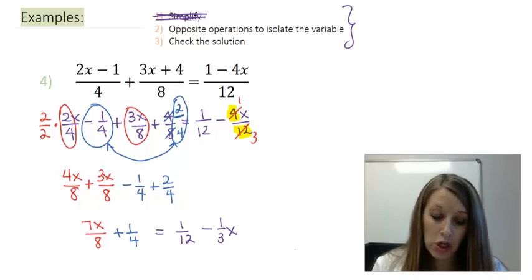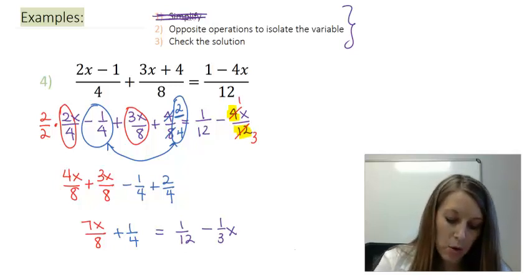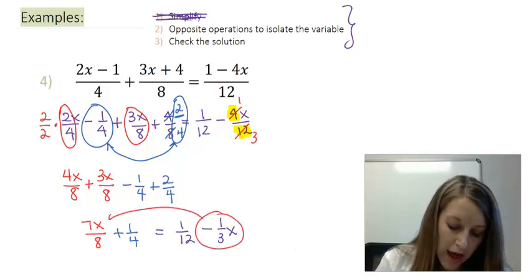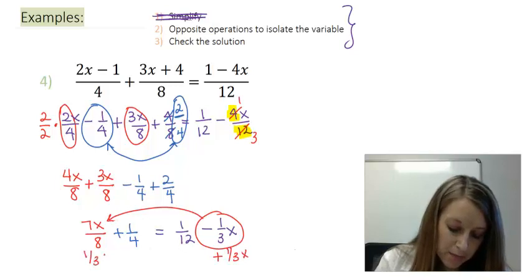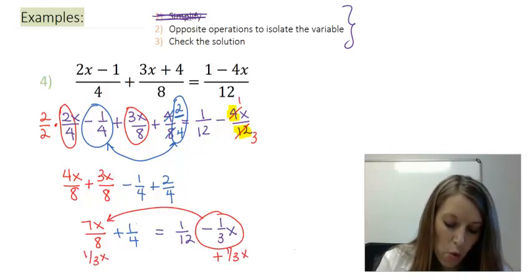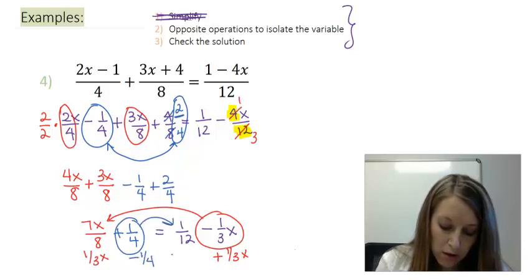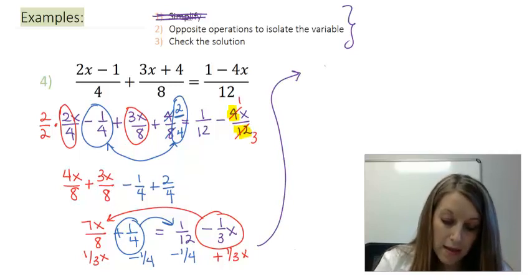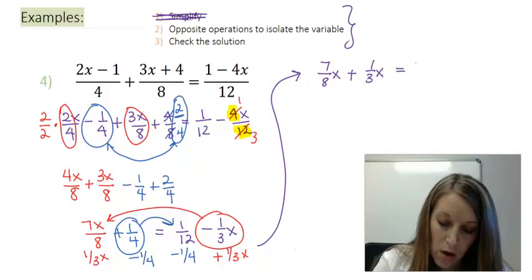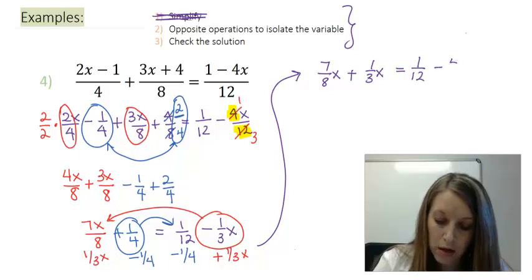Now I need to start rearranging things. So what I'm going to do here is I'm going to move my 1 third x to the left by adding 1 third x to both sides. And I'm going to move my 1 fourth constant term to the right by subtracting 1 fourth from both sides. So just rewriting that, that gives me 7 over 8 x plus a 1 third x is equal to 1 over 12 minus 1 fourth.